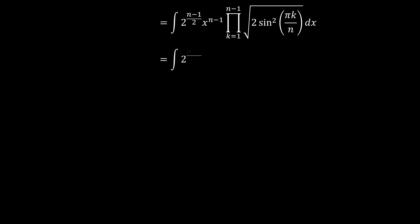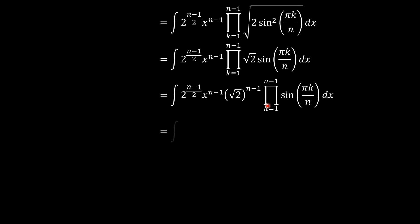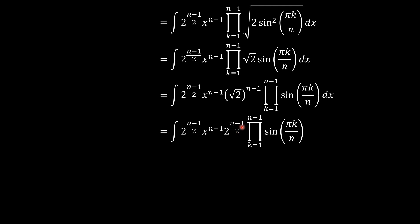We can pull the 2 out so that we have square root of 2 out there. Since we're multiplying this n minus 1 times, we have square root of 2 to the power n minus 1 brought out of the product sign. That gives us 2 to the power (n−1)/2, and combined with the original 2 to the power (n−1)/2, they multiply together to give 2 to the power n minus 1 times x to the power n minus 1.